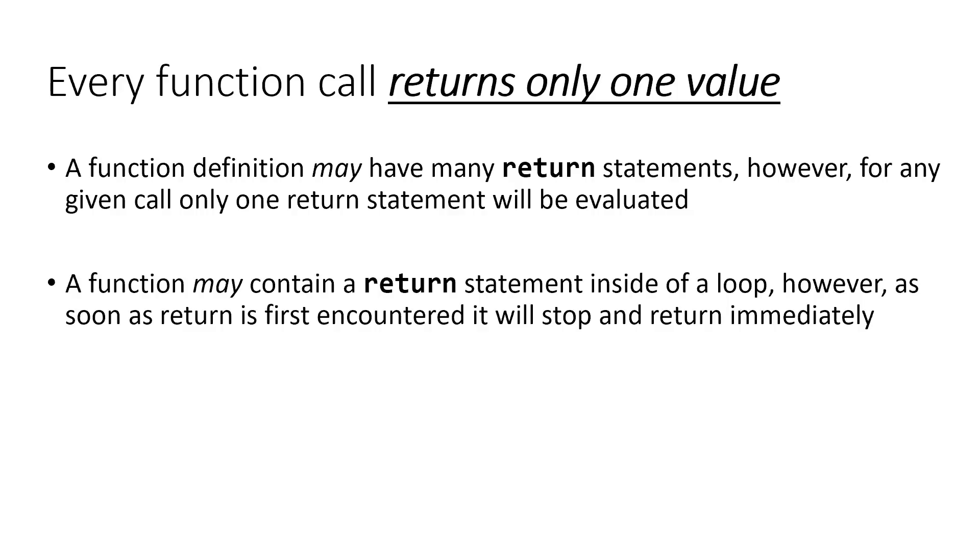We'll see soon that a function may contain a return statement inside of a loop, and this same rule applies. As soon as the first return statement is encountered inside of a loop, no more looping is going to happen. That function's job is done. We're going to return whatever value is specified with the return statement right back to the caller. Nothing else is going to happen inside of that loop or that function further.